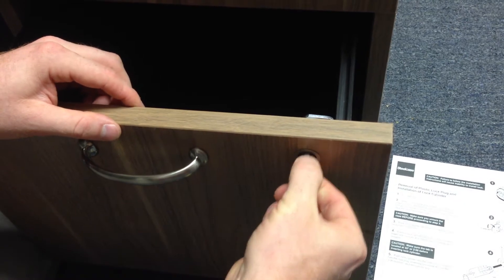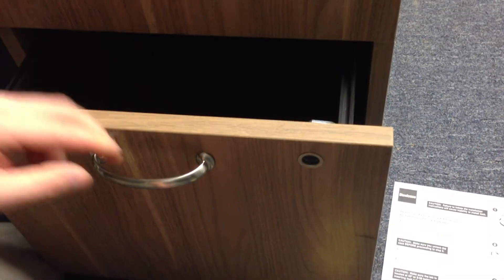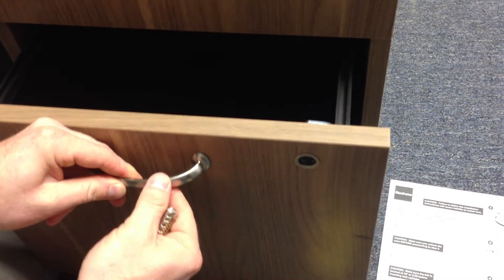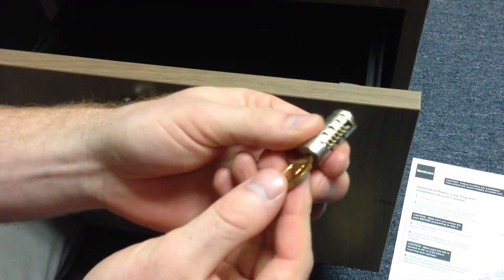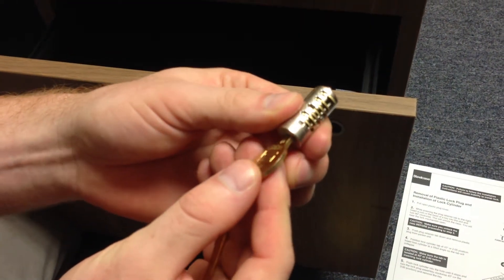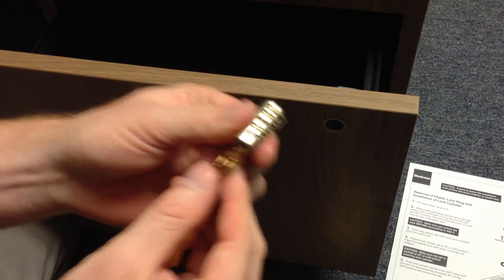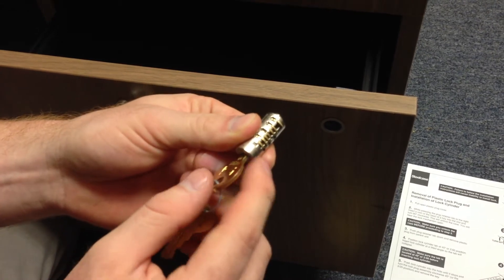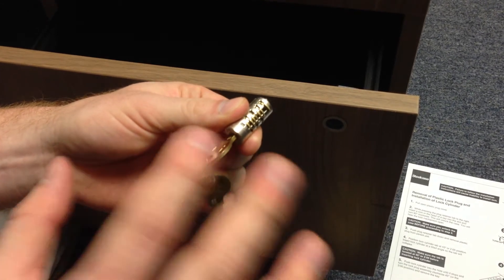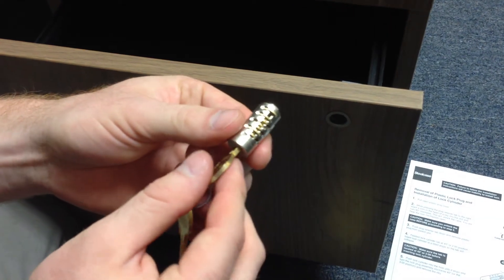Now that that's unlocked, this is removed. You're going to get your lock cylinder. Now this has to go in at a specific way, just at the right angle. It can be a little tricky if you don't get this in at the right angle.